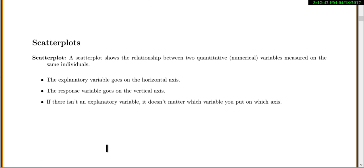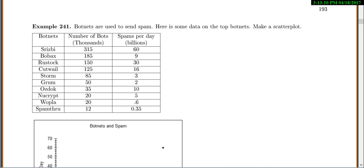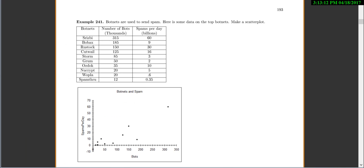Then we have what's called scatter plots. So scatter plots are a special kind of graph that show the relationship between two quantitative, or remember quantitative means numerical, variables measured on the same individuals. So the explanatory variable goes on the horizontal x-axis. The response variable goes on the vertical y-axis. Now, if there's not a specific explanatory response variable, it doesn't really matter which one you put on which axis.